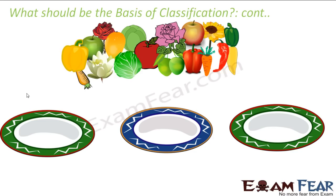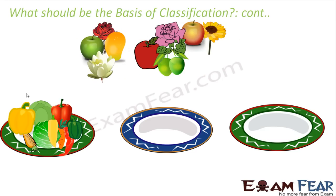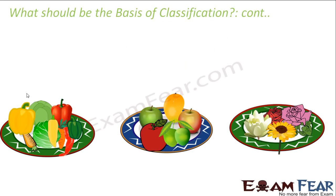Similarly, let us look at another example. Suppose you have a group of objects consisting of fruits, vegetables, and flowers, all mixed up together. If you need something out of this, it will be very difficult and time consuming to find it — for example, finding an apple from such a mixed pile would take a lot of time. So you classify them into three groups: first group vegetables, second group fruits, and third group flowers. You take all vegetables onto the first plate, all fruits onto the second, and all flowers onto the third. Now if you want an apple, you are not bothered with the first and third plates — you concentrate only on the second plate and it is much easier to find the apple.